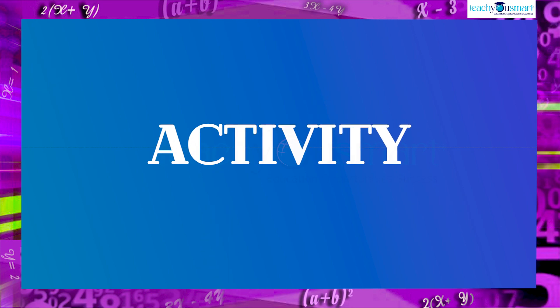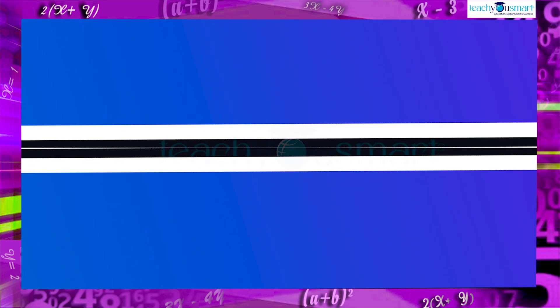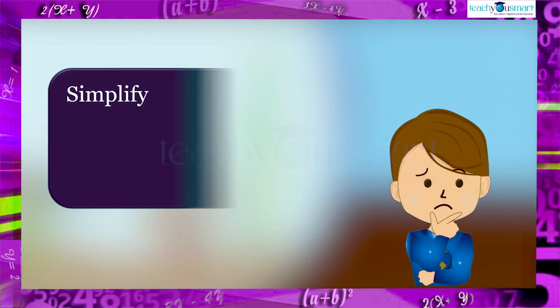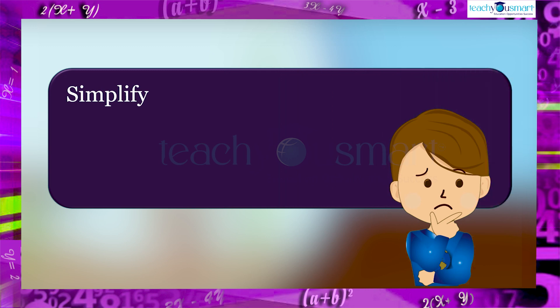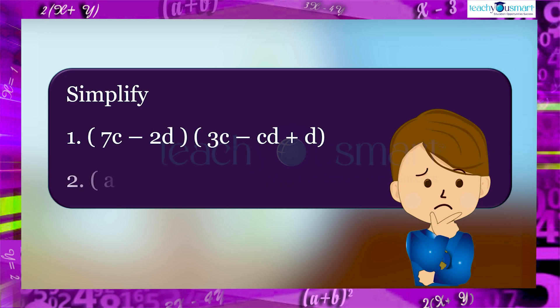Before winding up, let's check how much you understood by doing an activity. Simplify: 1. (7c - 2d) multiplied by (3c - cd + d). 2. (a - b) multiplied by (-2a - b + c).